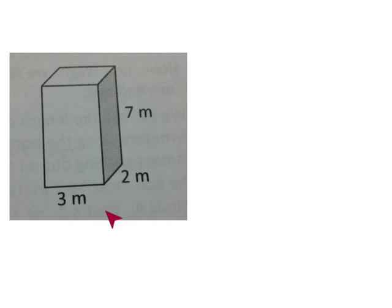Let's determine the volume of this rectangular prism. We have 3 meters by 2 meters by 7 meters. 3 times 2 would be 6, and 6 times 7 would be 42. So this is 42 meters cubed.